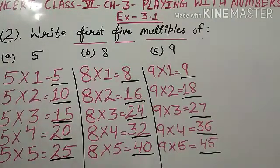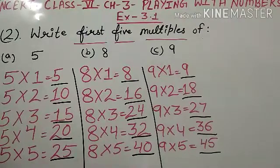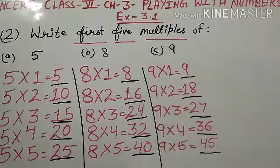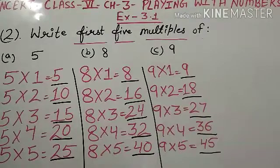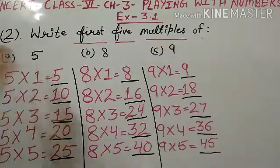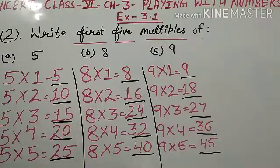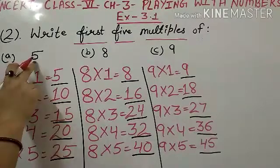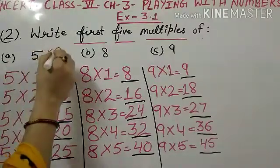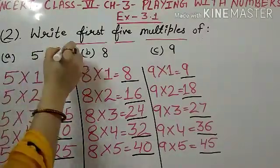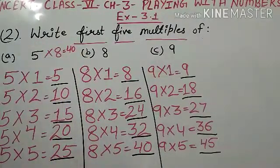You have to start multiplying from 1 and then multiply up to 5. In some questions, it might be asked differently. For example, if you're asked to find the 8th multiple of 5, how would you find it? For the 8th multiple of 5, multiply 5 by 8. So, the answer will be 40.